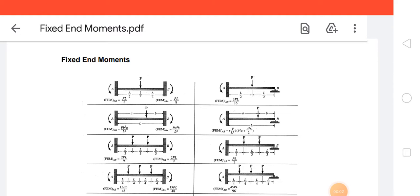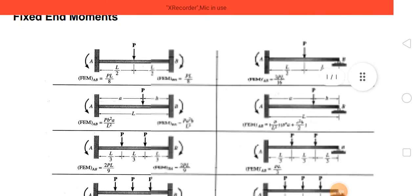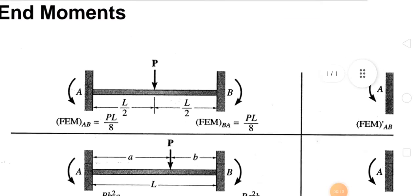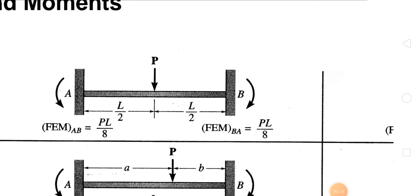Dear friends, today we will talk about fixed end moments with different loading conditions. The first condition is when there is a point load acting in the middle. Let's say we have a span of length L.